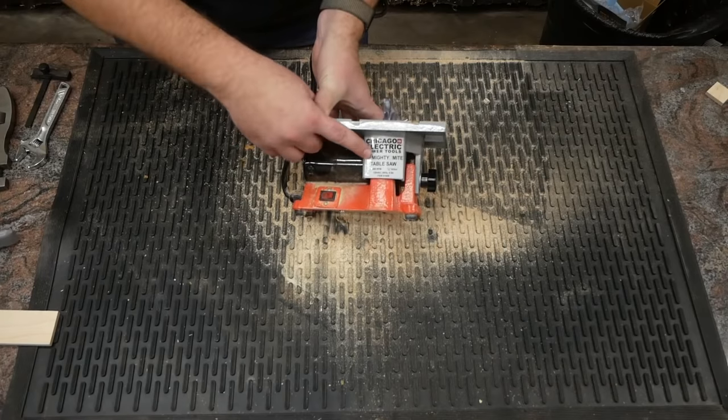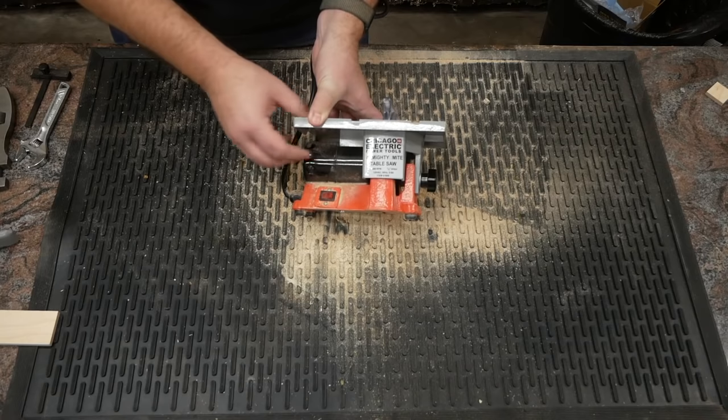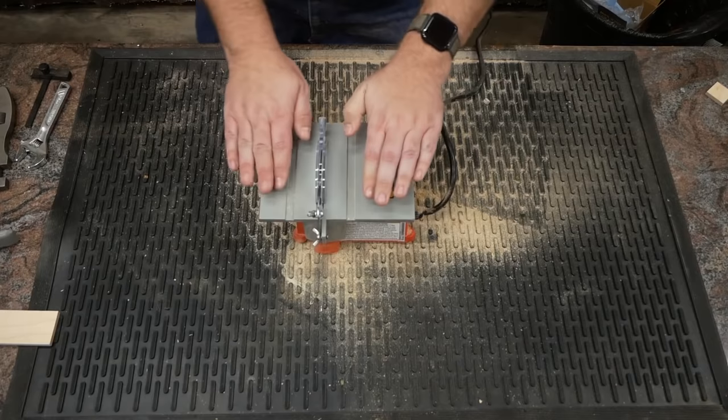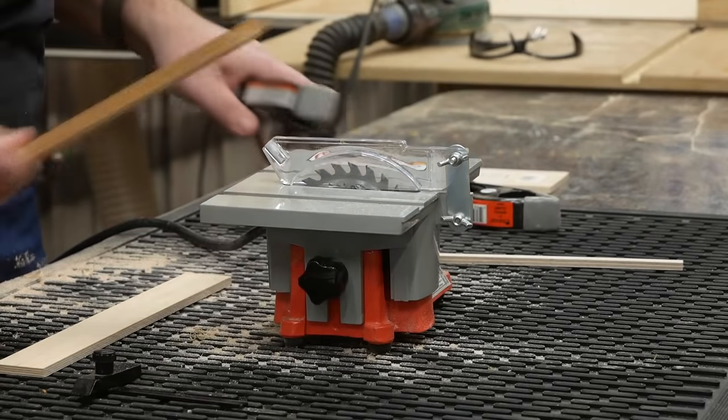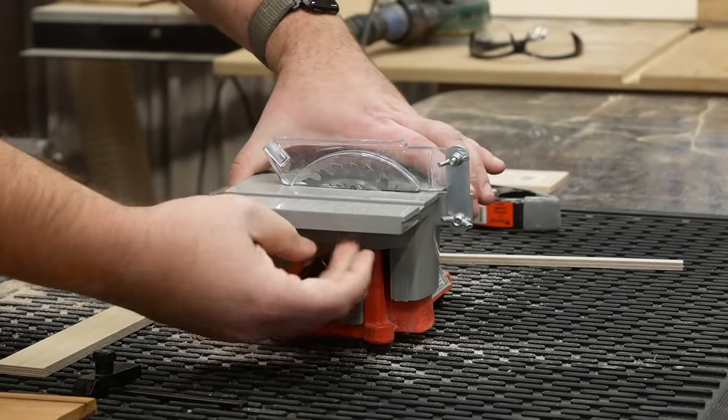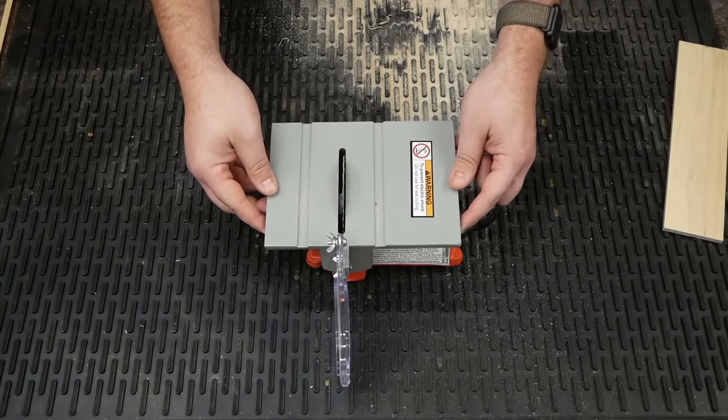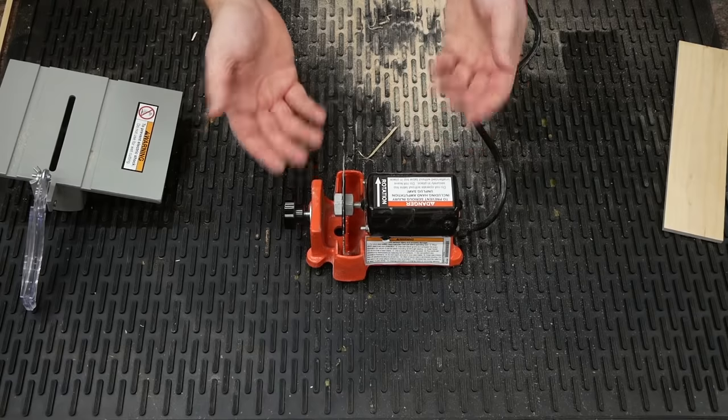According to the little sticker here—Mighty Mike!—it spins at 14,000 RPM and it draws most of an amp. Not a whole amp, but most of it. The blade does not tilt. It does have a height adjustment for the blade. By loosening this knob on the side, you can raise and lower the whole table or take it off. And there you go, there's the whole saw.